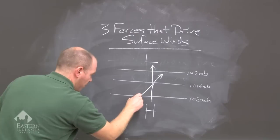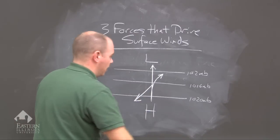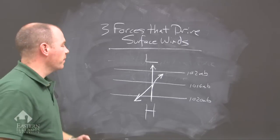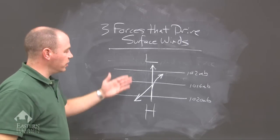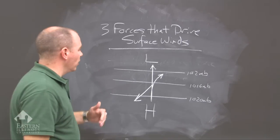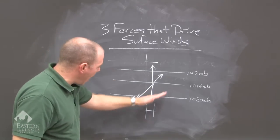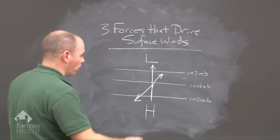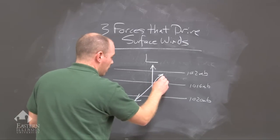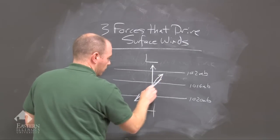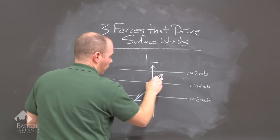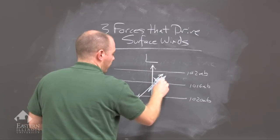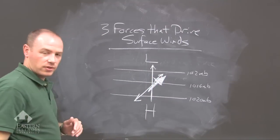Then we add the third force, friction — it pulls back and drags the wind. The resultant wind direction, when we add all three forces together, is winds that cross isobars at 45-degree angles.